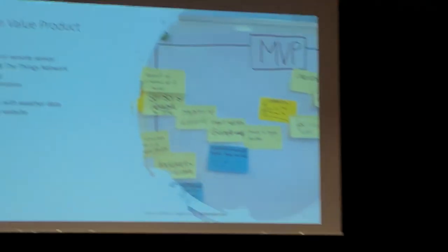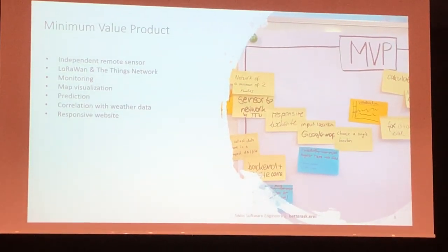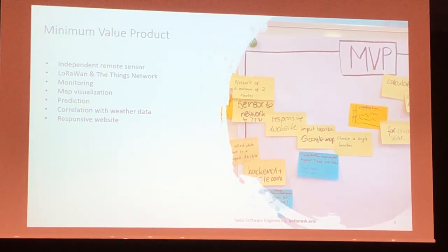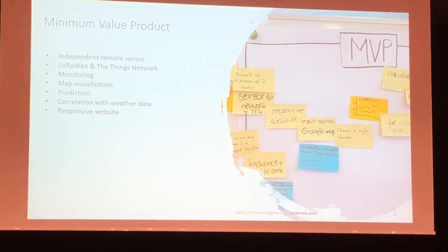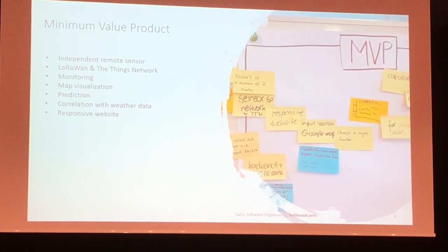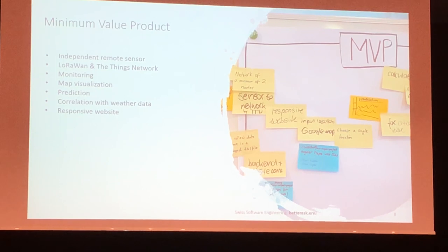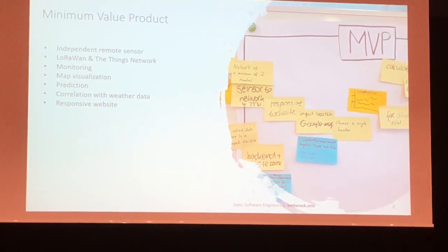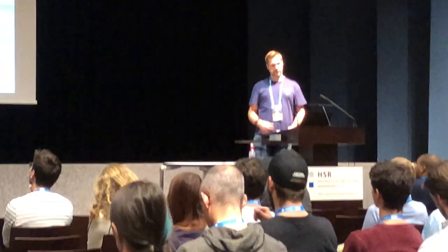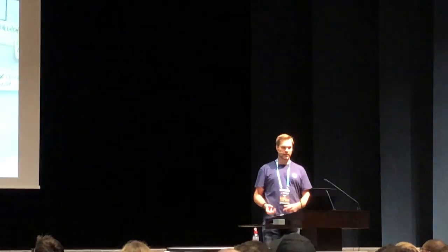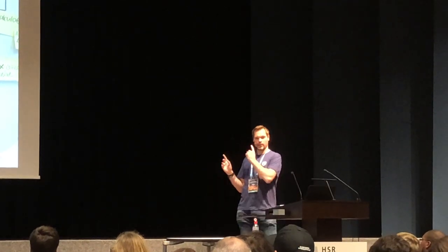For a sporty John Doe this would be very interesting — we could help him plan his sports regime and routes by predicting pollution and showing forecasts. And so we came to our MVP: an independent remote sensor that collects pollution levels, connects through a LoRaWAN Things Network to our cloud, monitors that information, visualizes it on a map, combines it with weather data, predicts pollution levels for the next days, and provides that through our web app. That is the scope of the project for this stage.